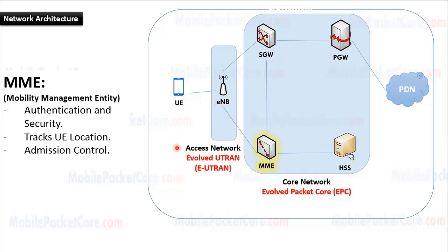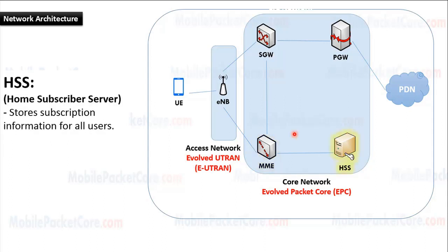In addition, the MME tracks the location of the UE and performs admission control, which means it decides if the UE is authorized to access this network or not, and if network resources should be allocated to this UE. The MME connects to the HSS and the SGW.